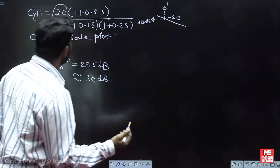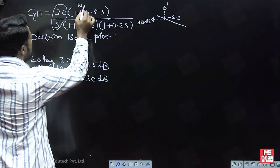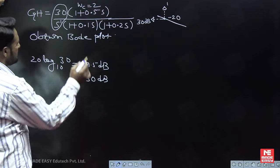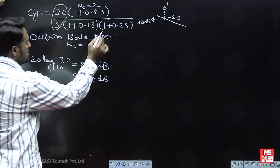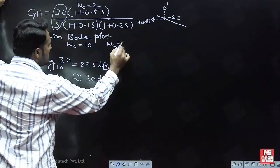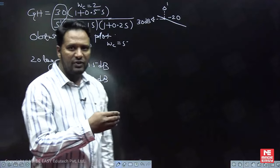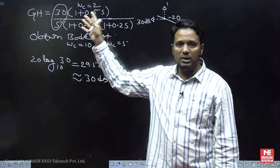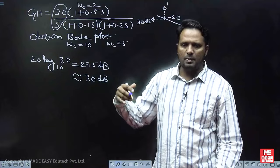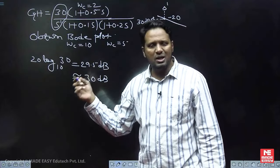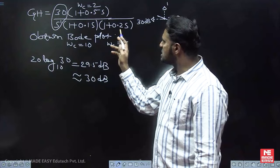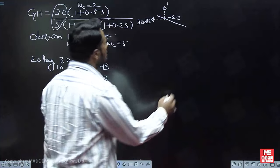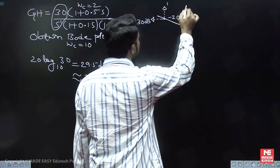What next? After this, whose Bode plot comes next? The zero has corner frequency 2, found as the reciprocal of the time constant. This pole has corner frequency 10, and this pole has corner frequency 5. We are varying omega from 0 to infinity. Among the remaining factors, which comes first? The one with the smallest corner frequency. Corner frequencies are 2, 5, and 10 — so the slope is going to change first at frequency 2.